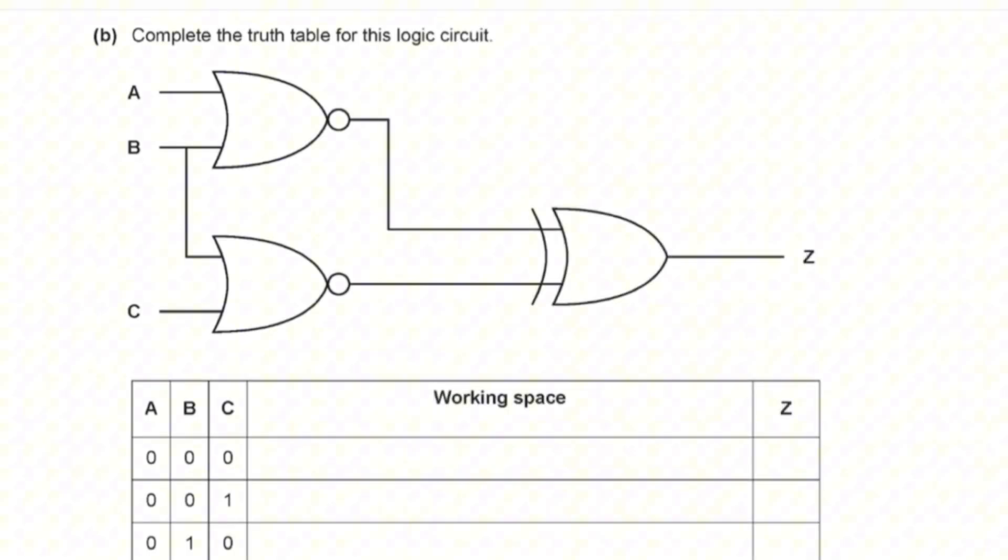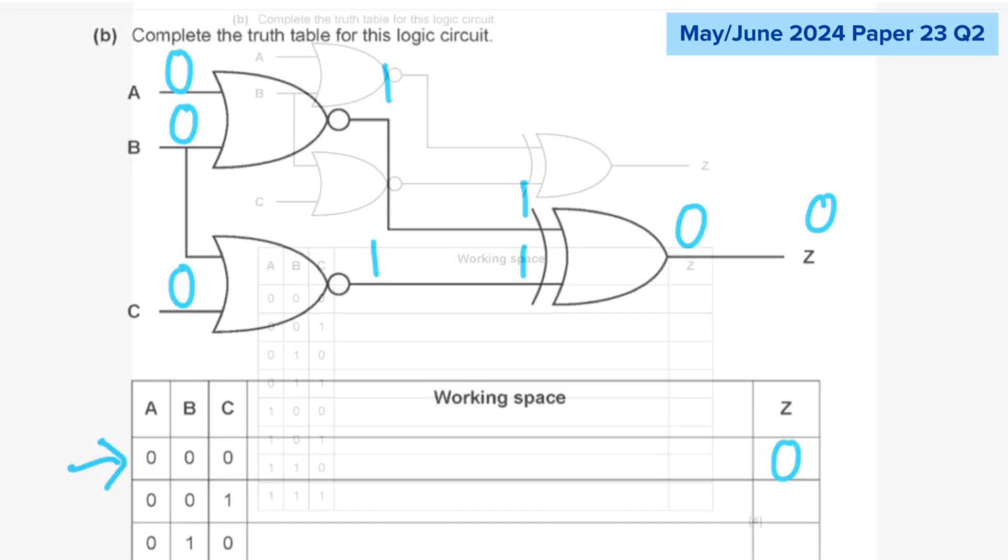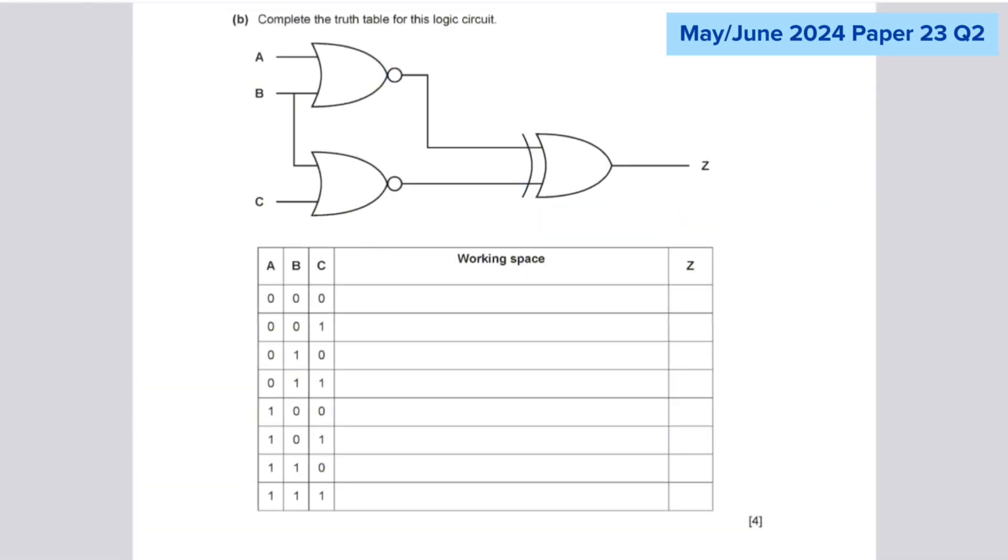And now for the final part, which is completing truth tables. Here we are given a circuit and we have to figure out the output that will be reached when we use these combinations of inputs. Some people like to do this method where they write all the inputs on the diagram and then figure out what the outcomes are. So like for example, this is zero and zero. So this node produces a one. And this is zero and zero, which produces a one. And then these two ones in the XOR gate produces zero. So Z is zero. And then they erase it and then they work on the next row. So you can do this method if you want to. There's absolutely nothing wrong with it. But I feel like it can be quite tedious to do.